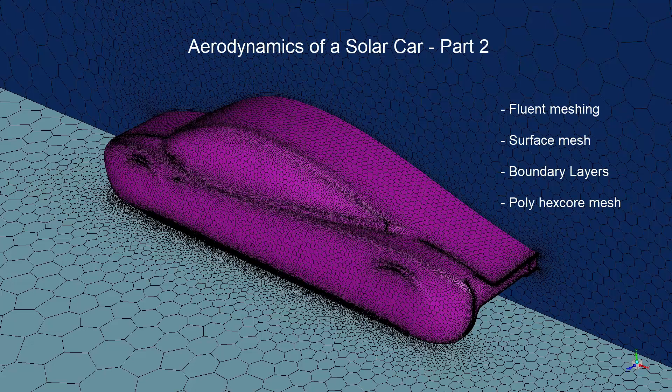In part 2, we will learn to mesh the car using fluent meshing. Firstly we will create a surface mesh on the car. Then we will create boundary layers around the car. And finally we will learn to create a polyhex core volume mesh.